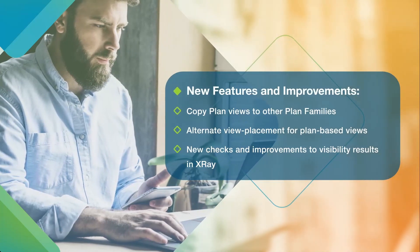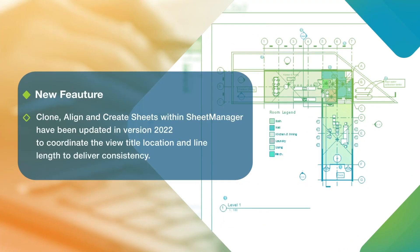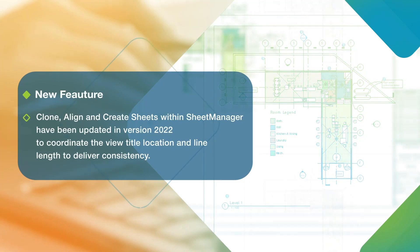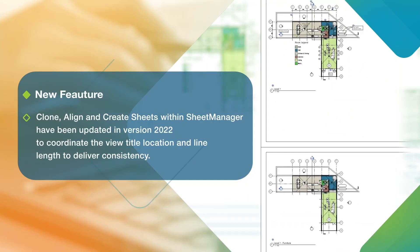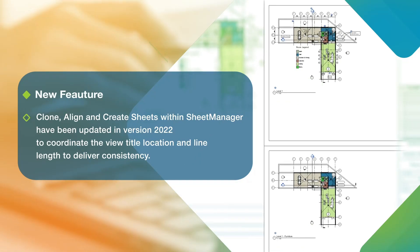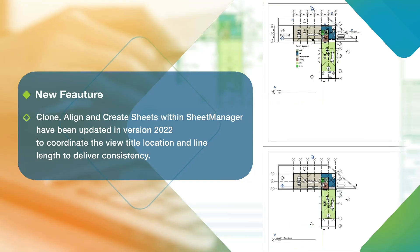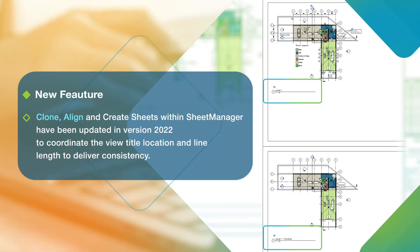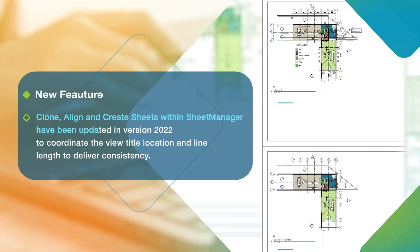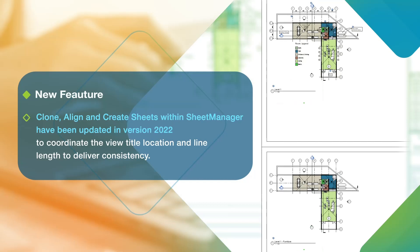A long-standing request from our customers and developers was the ability to gain programming access to the view title information, such as placement and title length. Unfortunately, this information was not available to developers until the release of Revit 2022. With the May 2021 release of ID8 Apps, we've added the ability to coordinate the view title location and line length in ID8 Clone, ID8 Align, ID8 Sheet Manager, and the Create Sheets feature for Revit 2022, ensuring consistency in sheet layouts.